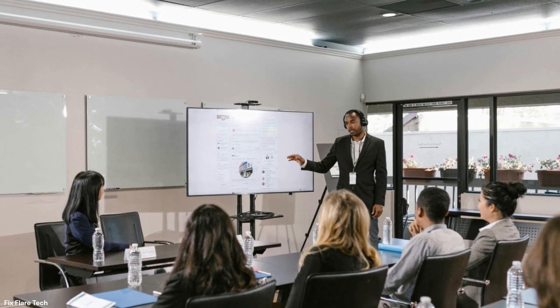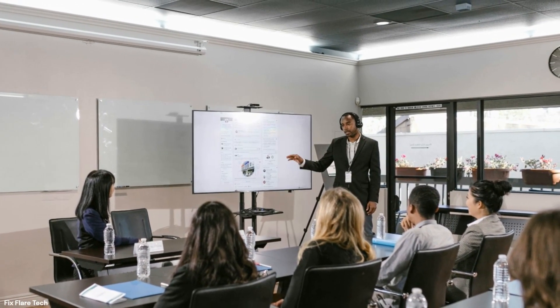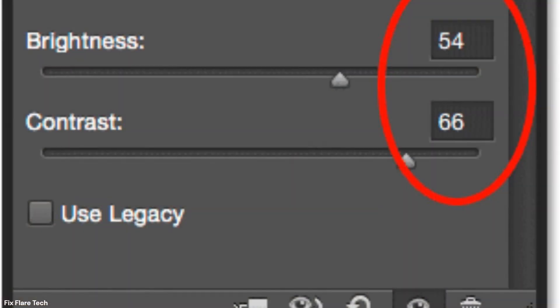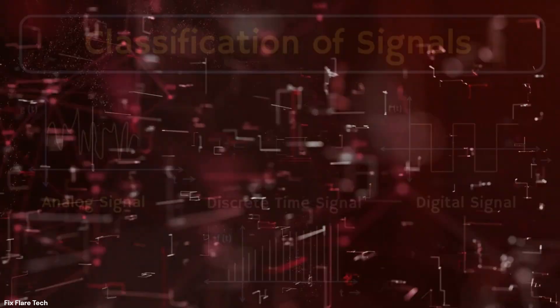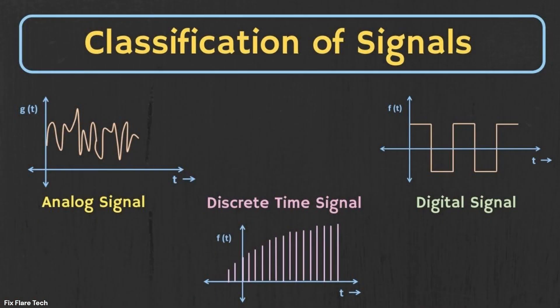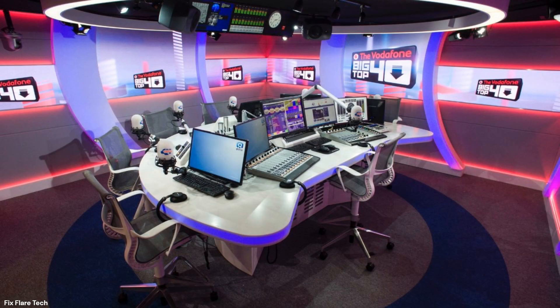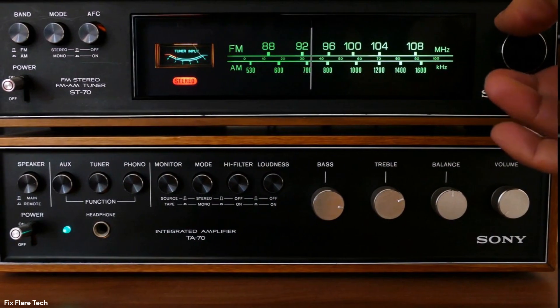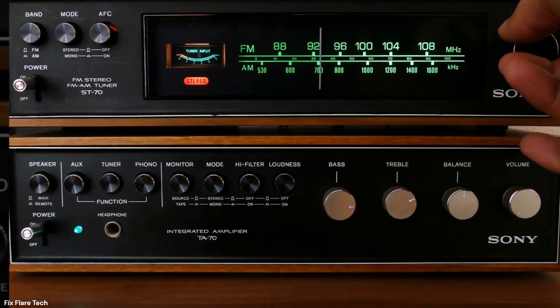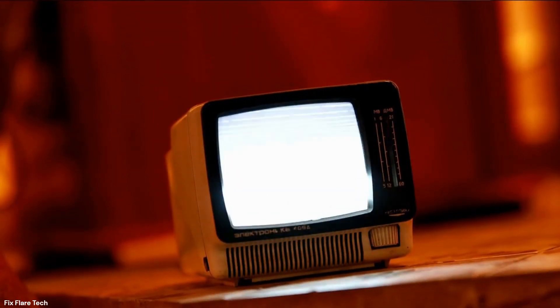In the realm of visual tech, digital potentiometers are integral to the functioning of LCD screens. They regulate the contrast and brightness levels, ensuring optimal visual output for users. Another significant application is in the calibration of signal levels. Whether it's in a broadcasting station or a scientific research lab, digital potentiometers are used to fine-tune signal strengths, ensuring accurate transmission and reception of data.